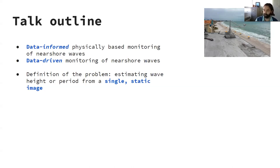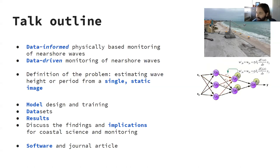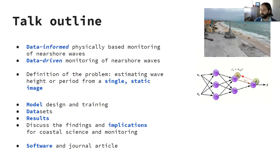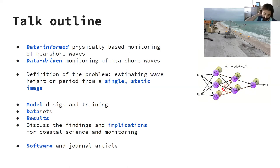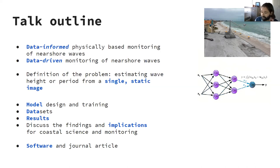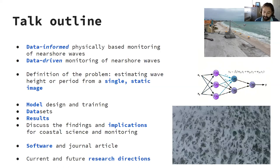I'll define the problem as estimating wave height or period from a single image, then chaining those estimates together to form time series. I'll talk about the model design — this is very much the high-level coastal science talk, not the low-level computer science talk — covering how the model was implemented, how we trained it, and its relative advantages and disadvantages. I'll cover three different datasets, discuss results and implications for coastal monitoring, plug the open-source software I've developed, and talk about the journal article now in press in Coastal Engineering. Finally I'll discuss where this research is going and how interested folks might be able to collaborate.